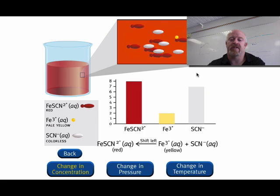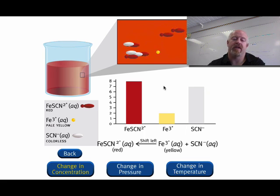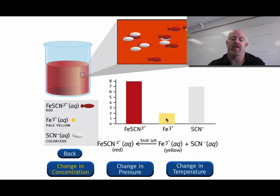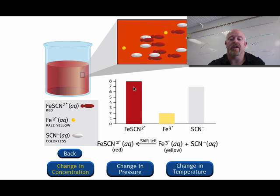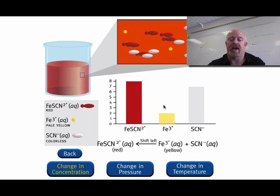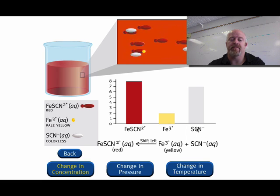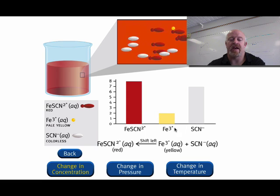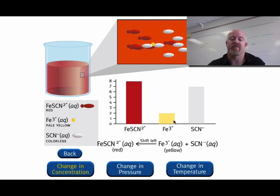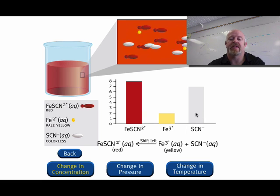We put more sodium thiocyanate in - sodium is a spectator - so the clear SCN- went up, meaning there was too much clear. To get rid of some of that, the system used some of the yellow Fe3+ and made more of the red iron-thiocyanate. The reaction shifts to the left, towards the reactant side. If our goal was to get rid of all the iron ions by themselves, we could just keep adding sodium thiocyanate until it was completely gone - at that point you've actually broken the equilibrium by removing one of your products.